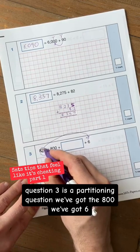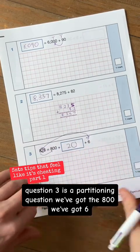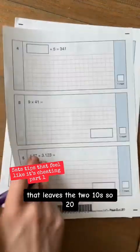Question three is a partitioning question. We've got the 800, we've got the 6, that leaves the two tens, so 20.